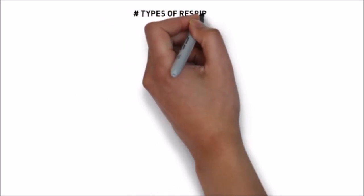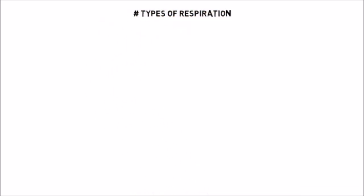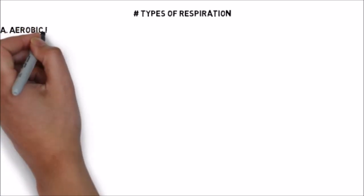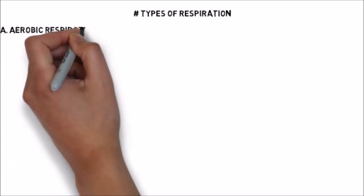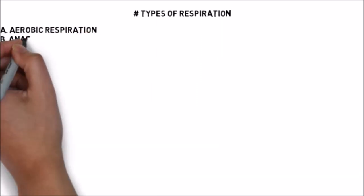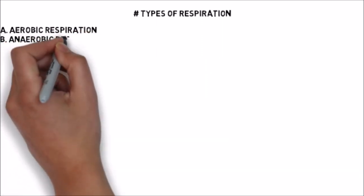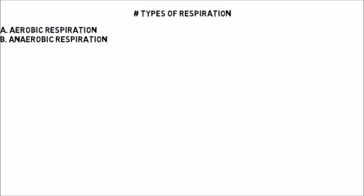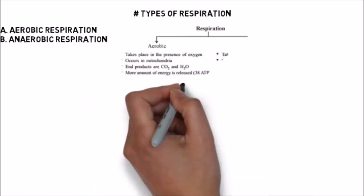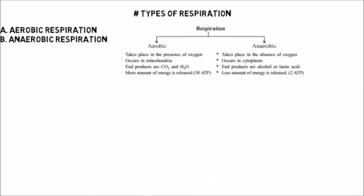So those are the four steps of respiration: breathing, exchange between lungs and blood, exchange between blood and cell, and cellular respiration. Now let us focus on the types of respiration. Respiration occurs in two ways: number one, aerobic respiration; number two, anaerobic respiration. In aerobic respiration, oxidation of food takes place in the presence of oxygen in the mitochondria. In anaerobic respiration, respiration takes place in the absence of oxygen in the cytoplasm.